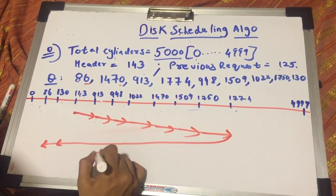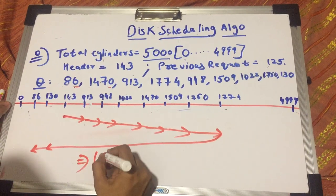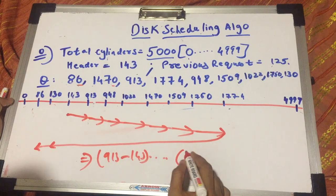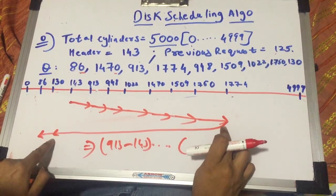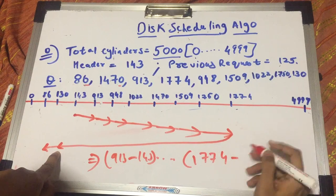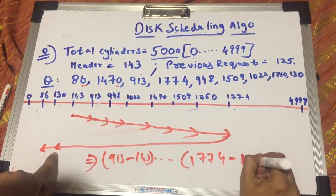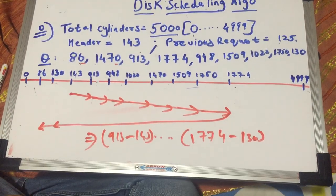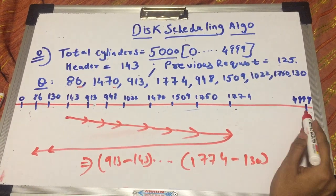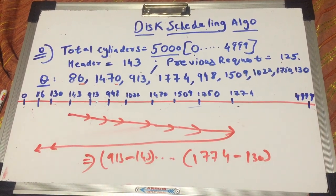So in this case, the total seek time would be equal to 913 minus 143, and here when it comes here, it will be equal to 1774 minus 130. Whereas in our SCAN algorithm, it was 4999 minus 130.